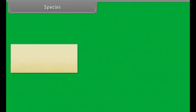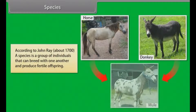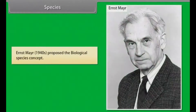According to John Ray (about 1700), a species is a group of individuals that can breed with one another and produce fertile offspring. Ernst Mayr in the 1940s proposed the biological species concept.